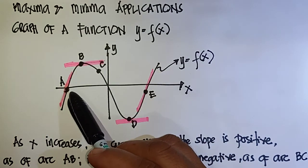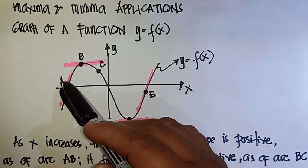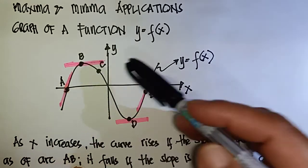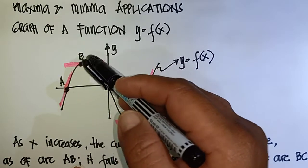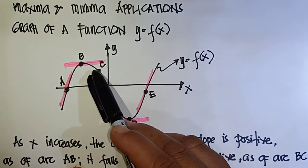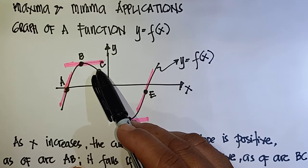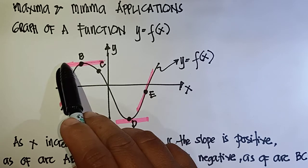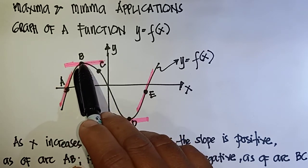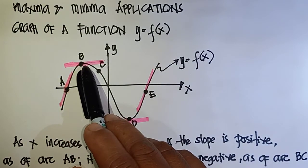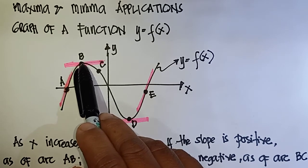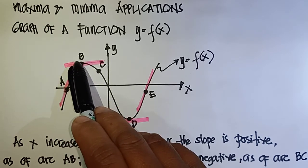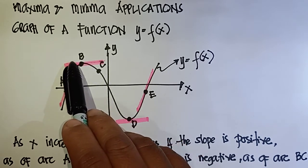Arc AB has a positive slope because it is going up. Arc BC has a negative slope because it is going down. At point B, which is the maximum point, the slope is zero because the tangent is horizontal — rise over run equals zero.